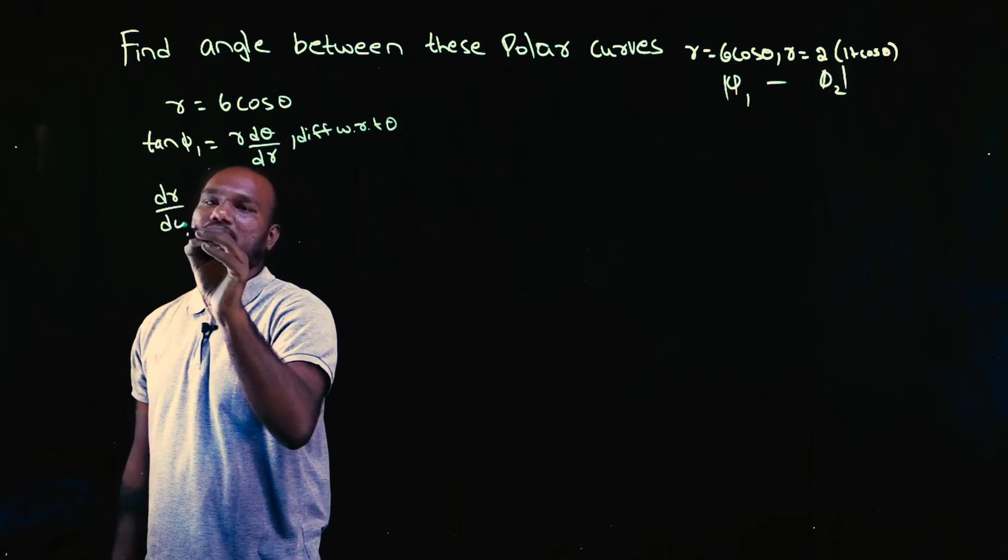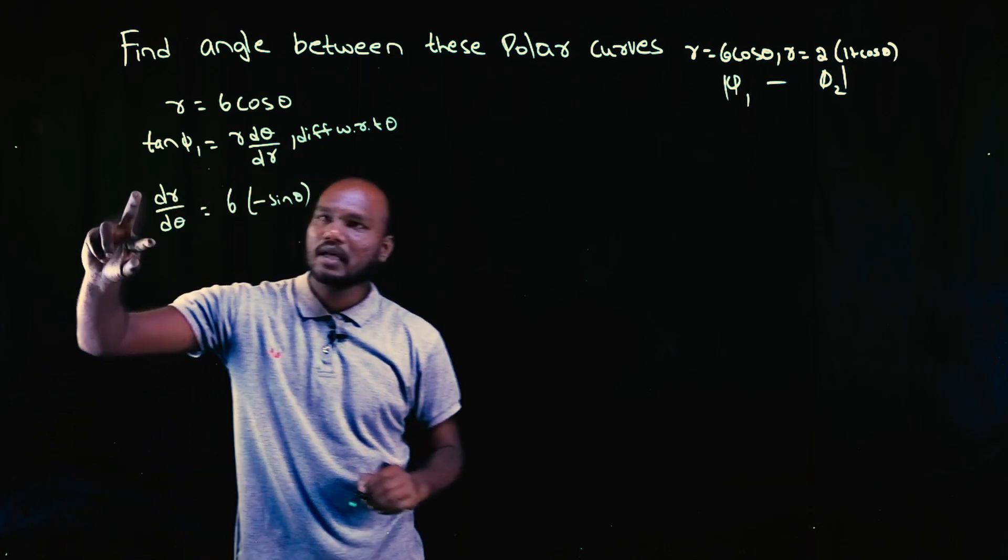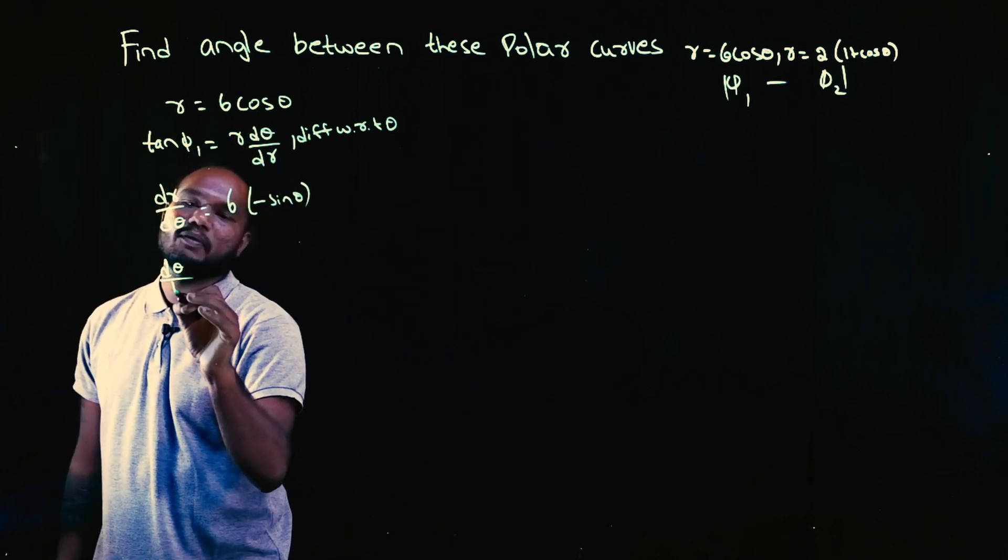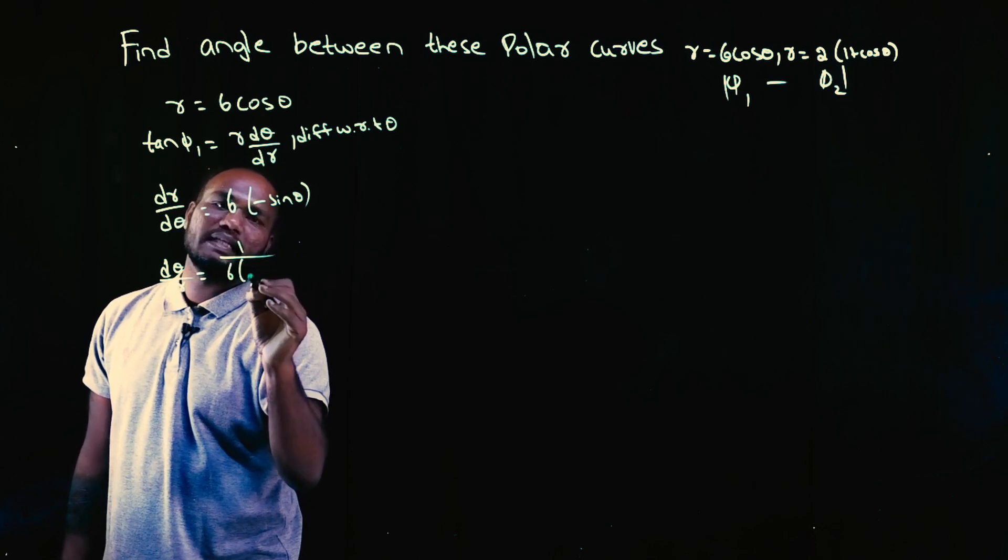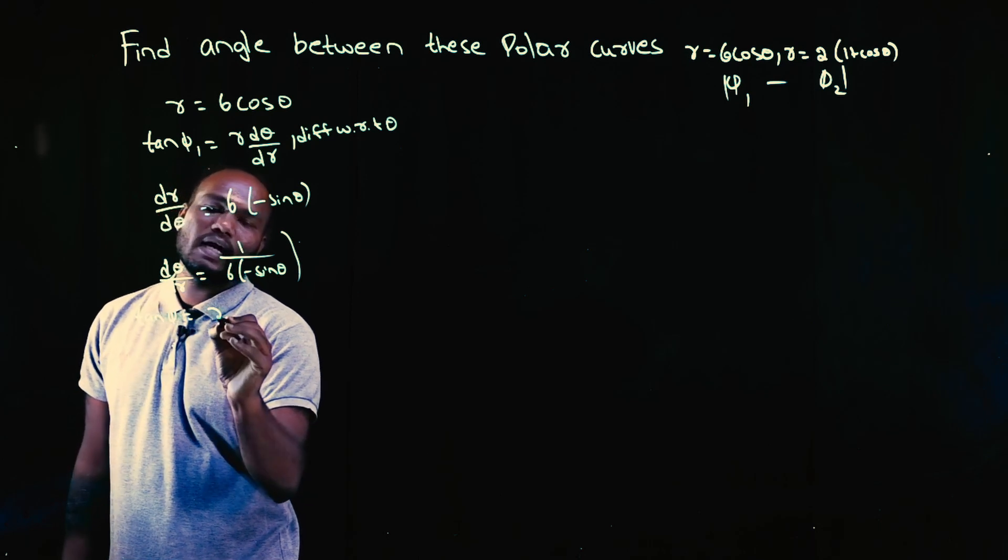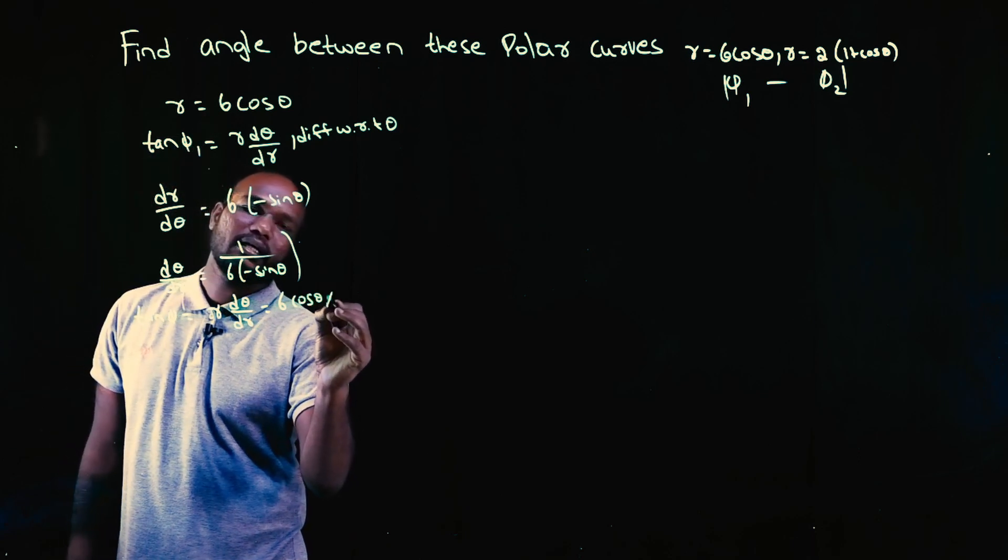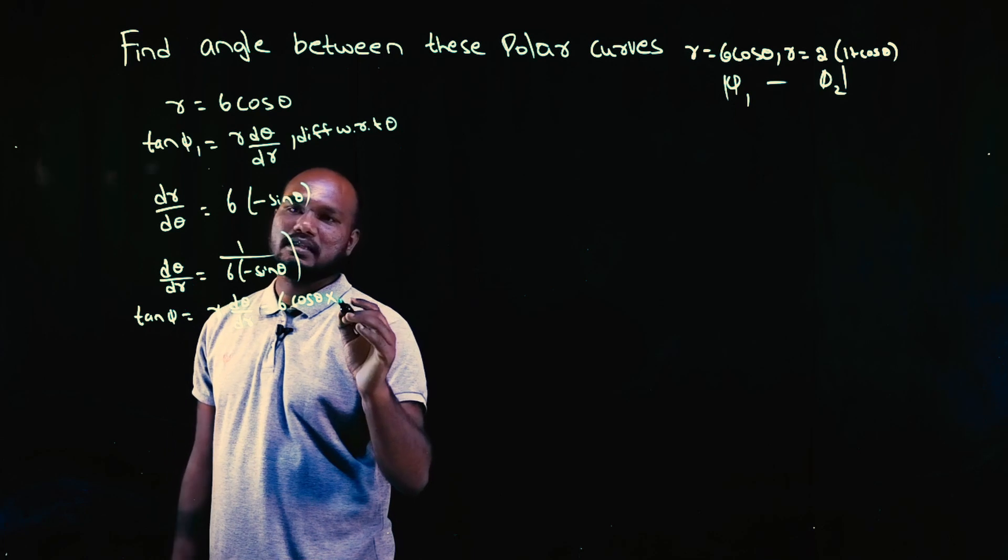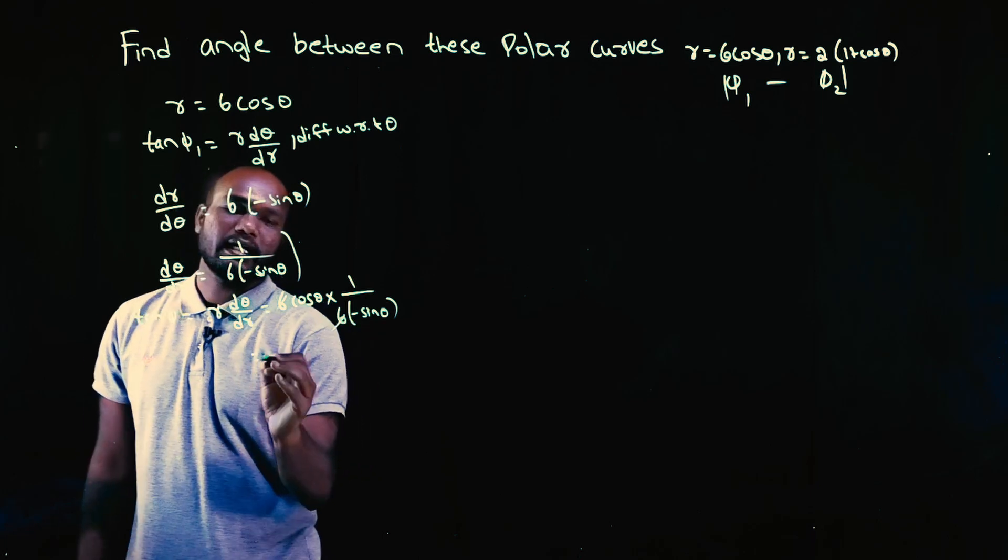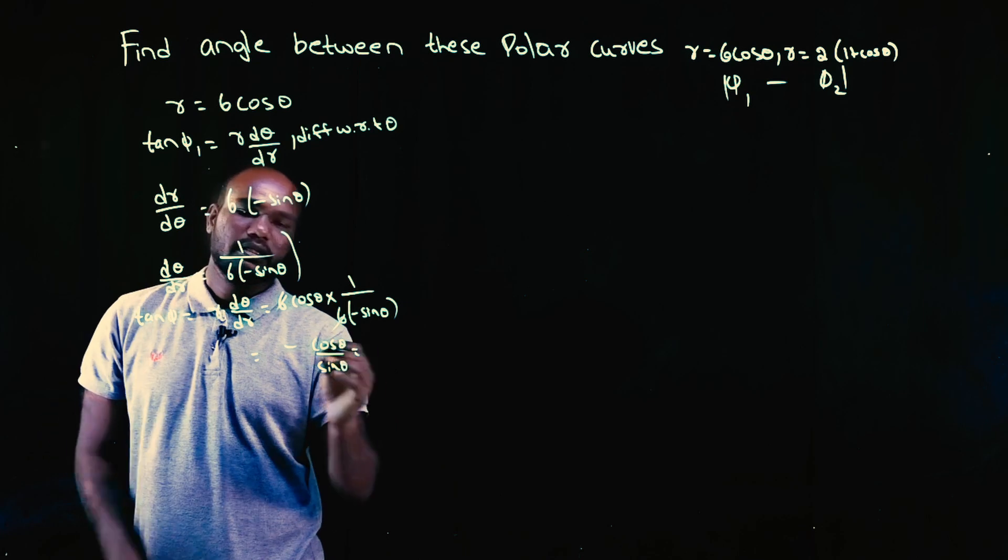R differentiation is dr upon dθ is equal to 6 is a number, cos θ differentiation is minus sin θ. I am interested in dr by dθ. No, I want dθ by dr. So, let's flip it. dθ upon dr is equal to 1 upon 6 minus sin θ. Next, tan φ is given as what? R into dθ upon dr. What is the value of R? 6 cos θ into dθ by dr value is how much? 1 upon 6 into minus sin θ. 6 can get cancelled. Minus cos θ upon sin θ is the value of tan φ1.